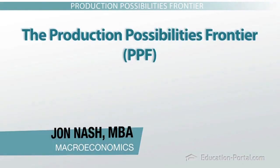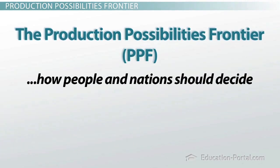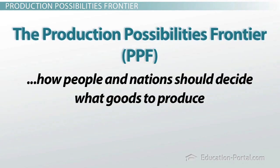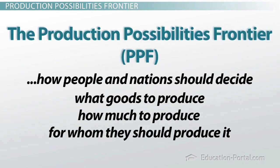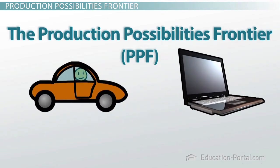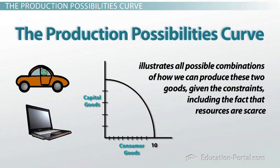The Production Possibilities Frontier is an economic model used to illustrate how people and nations should decide what goods to produce, how much to produce, and for whom they should produce it. It's a model and a concept that looks at only two goods at a time. For example, what combination of cars and computers should a nation produce? The Production Possibility Curve illustrates all the possible combinations of how we can produce these two goods given the constraints we have, including the fact that resources are scarce.